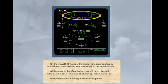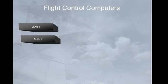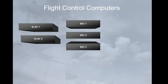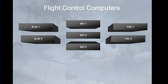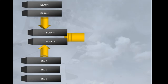Now we will look at the flight control computers. The movements of the flight control surfaces are managed by seven computers: two elevator and aileron computers (ELAC), three spoiler and elevator computers (SEC), and two flight augmentation computers (FAC). In addition, two flight control data concentrator computers (FCDC) are used to acquire data from the ELAC and SEC, then send it to the EIS.